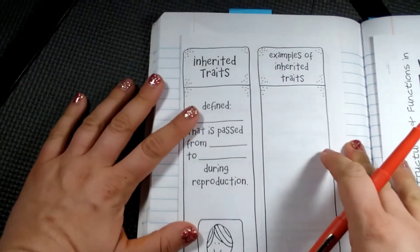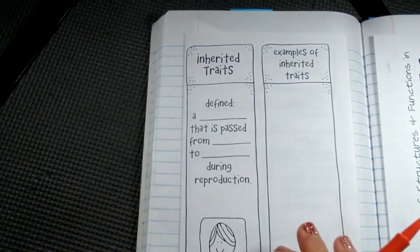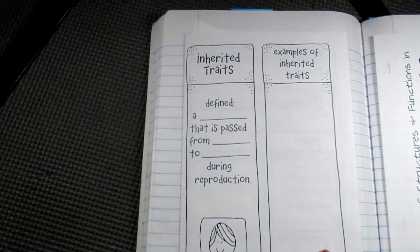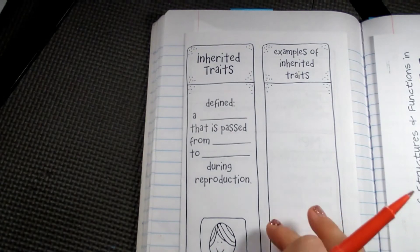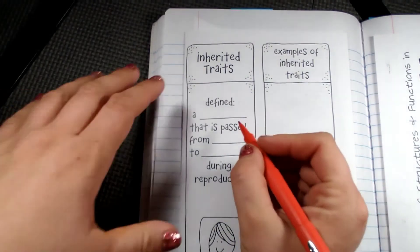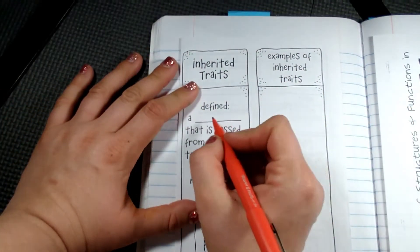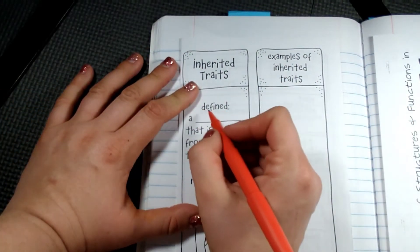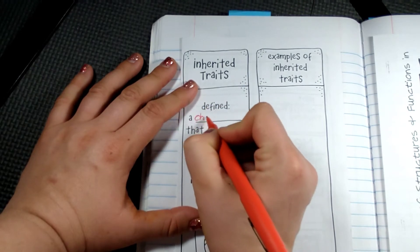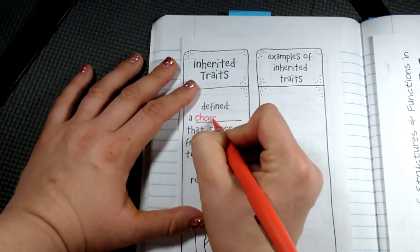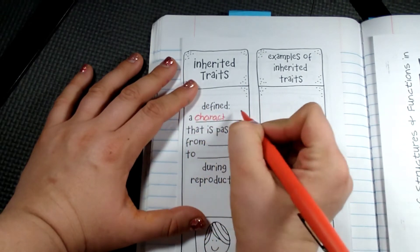Now what are those? An inherited trait is defined as a characteristic that is passed from parents to the offspring. So basically, it's a characteristic that you get from mom or dad.